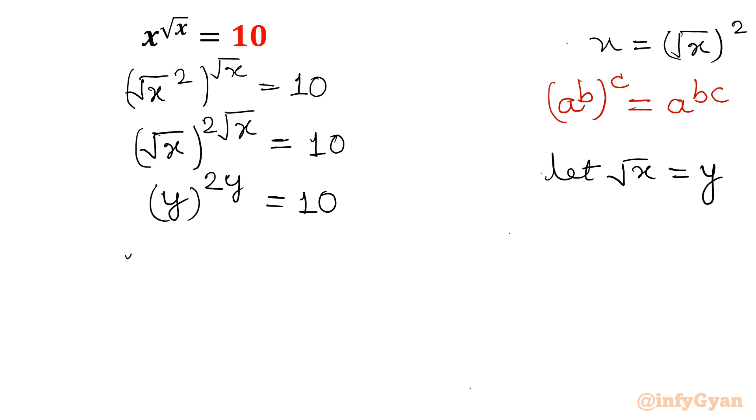Now take ln both sides. So ln y raised to the power 2y equals ln 10. Now the property will come, that is logarithmic a power b, log a power b, this b will come as a coefficient b ln a. So our equation will become now 2y ln y equals ln 10.